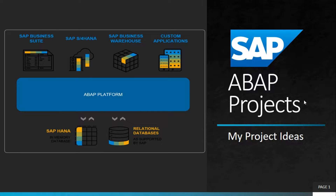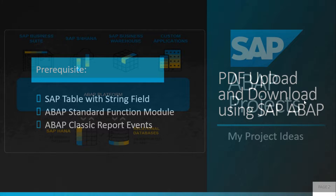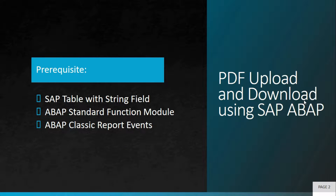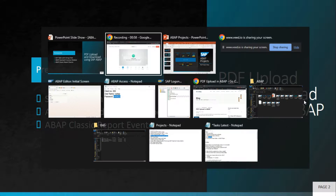Welcome to my project ideas — this is an ongoing series where we discuss SAP ABAP projects. Today we have something called PDF upload and download using SAP ABAP. There are a few prerequisites: a SAP table with a string field for storing the PDF in x-string or raw format, ABAP standard function modules for upload, download, and conversion, and ABAP classical report events. If you don't understand any of these, links to learn ABAP basics will be in the description.